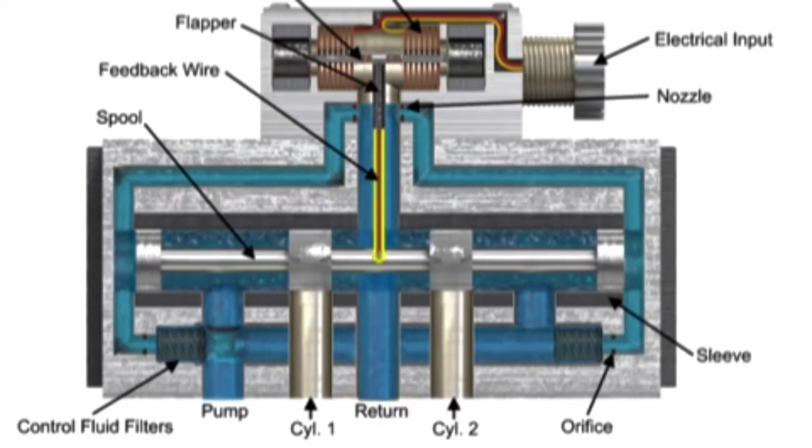A feedback wire attached to the flapper terminates in a ball end that sits in a very close-fit slot in the spool. When the torque motor coils receive a current signal, the armature rotates clockwise or counterclockwise and pushes the flapper closer to one nozzle and farther away from the opposite one.